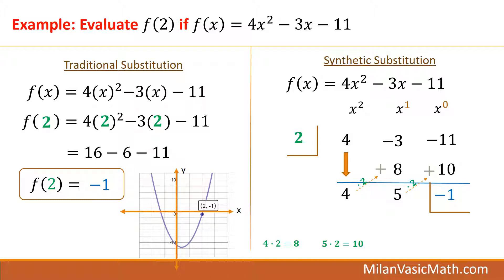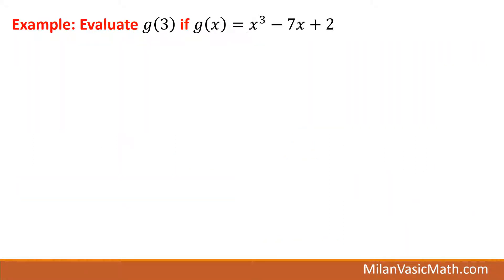And then we just repeat this again and again until we get to the end. 5 times 2 gives us 10, write in the 10, negative 11 plus 10 is negative 1. So box that off. And then negative 1 is your answer. So again, f of 2 equals negative 1.